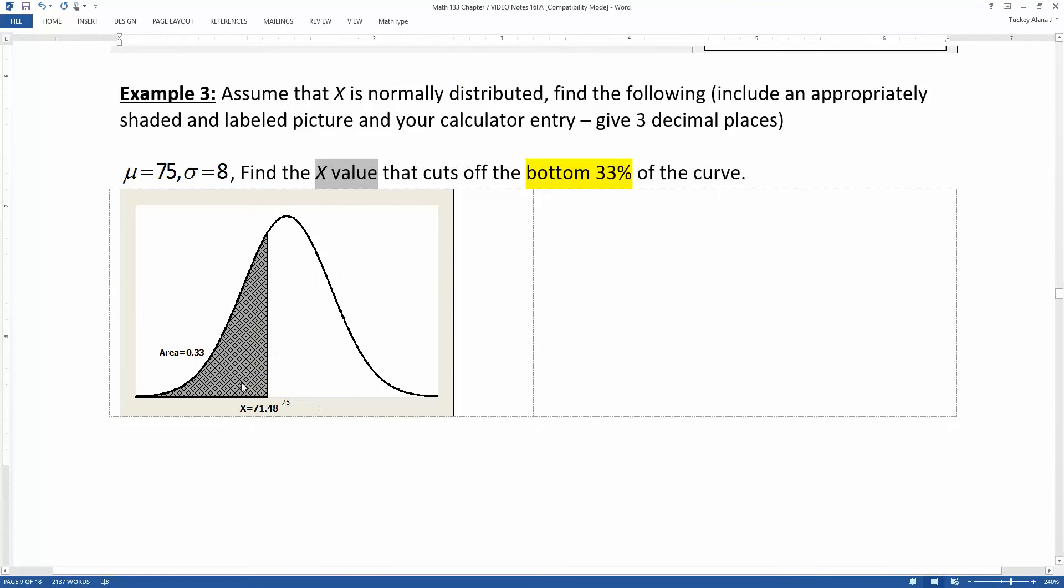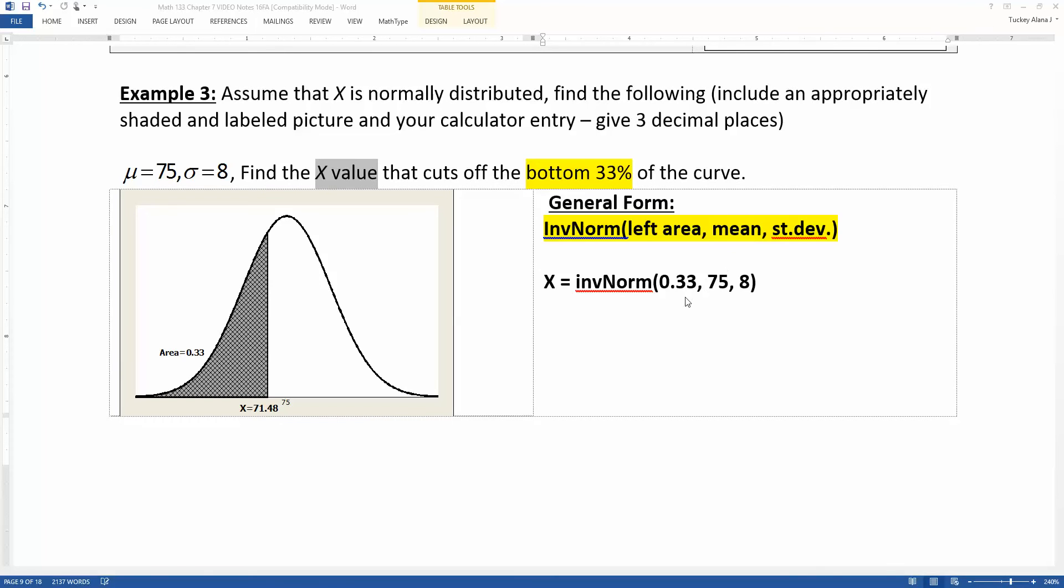The left tail area means the area to the left of the score you're looking for. Well, we're looking for that x value, so I want to know the area to the left of it, which is rather obviously 0.33. Then 0.33, comma, mu, comma, sigma, which means I'm going to type in a 75 and eight for the mu and the sigma. And there we have it.